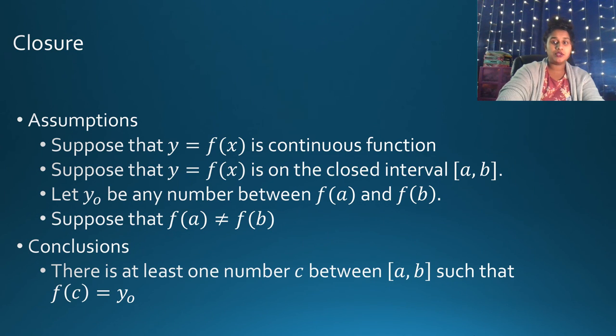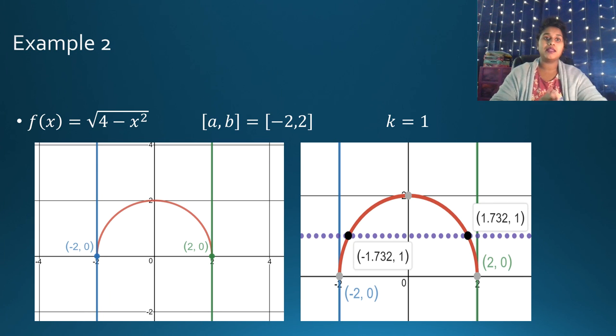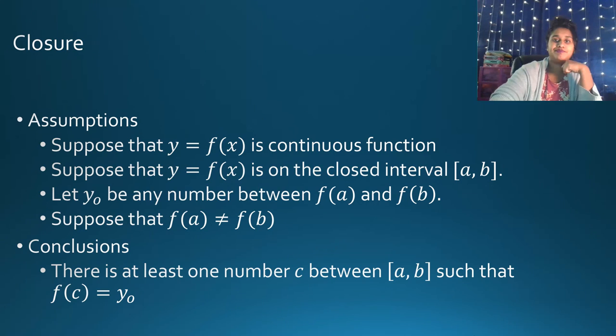Why was this not an allowable question? Well, you should have checked your assumptions. Is it continuous? Yes. Is it a closed interval? Yes. Do F of A and F of B not equal each other? F of A and F of B did equal each other, so I shouldn't have been allowed to answer this question.